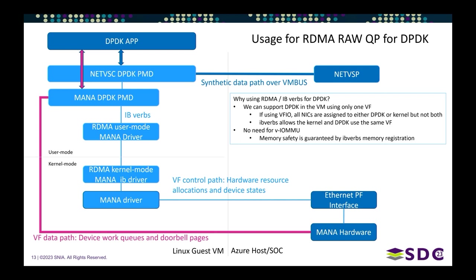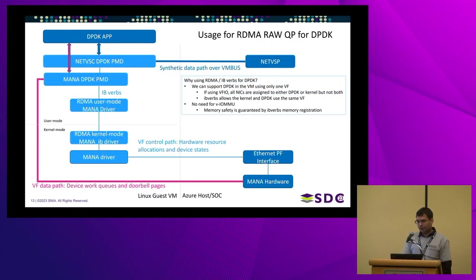Why use IB verbs for DPDK instead of VFIO? With VFIO — virtual function I/O — you expose multiple ports in one virtual function, and everything is taken from the kernel exclusively into user space. But with IB verbs, you can expose just one port to DPDK while the other port is still used by the kernel. That's very helpful. Also, we don't need to implement a virtual IOMMU, because memory safety is guaranteed by IB verbs memory registration.